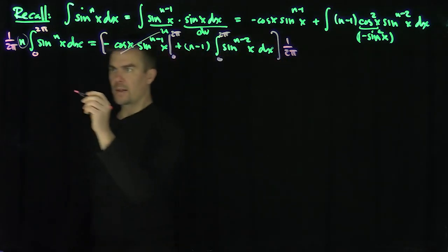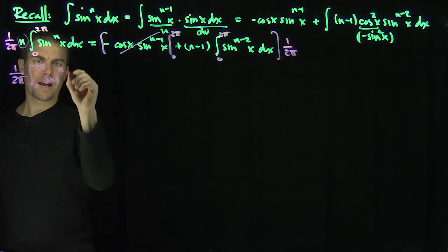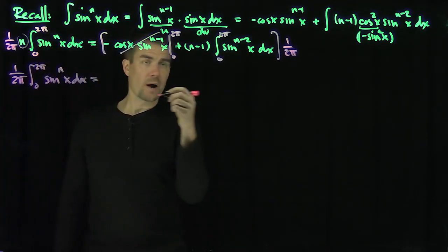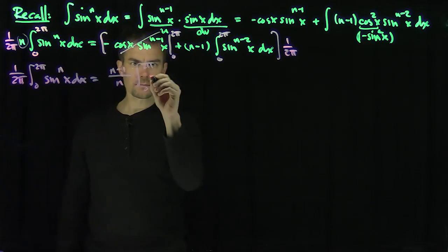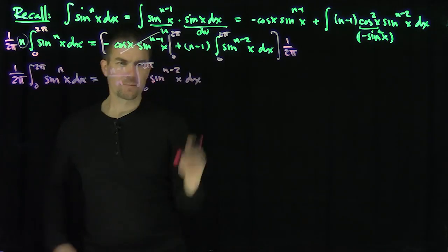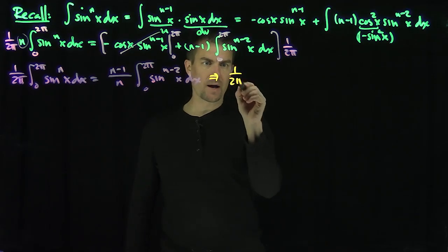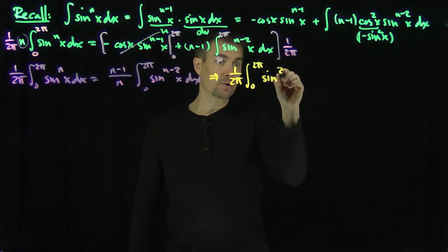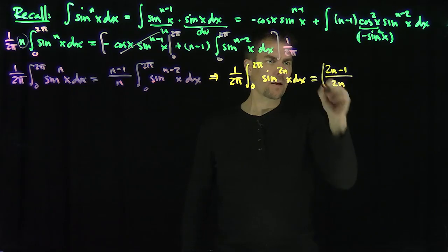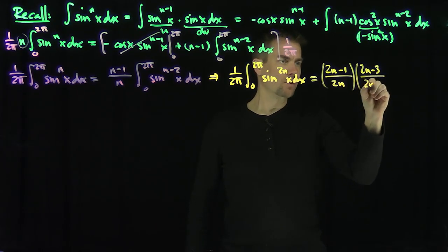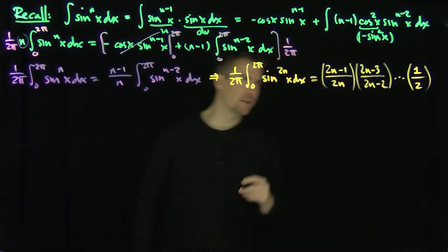We can conclude that (1/2π) times the integral from 0 to 2π of sinⁿ(x) dx equals (n−1)/n times (1/2π) times the integral from 0 to 2π of sinⁿ⁻²(x) dx. For even powers of sine, I can build a crank for this, so if I look at even powers, (1/2π) times the integral from 0 to 2π of sin²ⁿ(x) dx equals (2n−1)/(2n) times (2n−3)/(2n−2), all the way down, where the odd numerators terminate at 1.